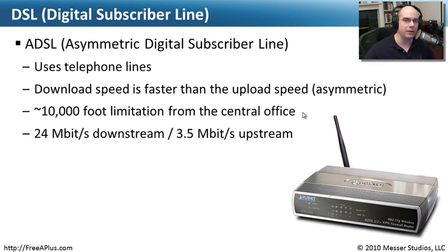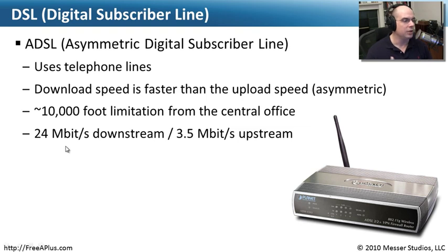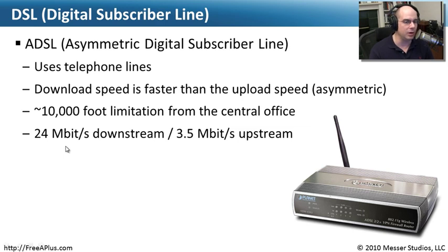The farther you are from the central office, the slower your DSL connection will be. Theoretical maximums for DSL are around 24 megabits downstream and about 3.5 megabits upstream, but almost nobody sees speeds like that — they tend to be much lower. Real-world speeds are typically about one-tenth of that maximum and depend heavily on the quality of your phone line and distance from the central office.